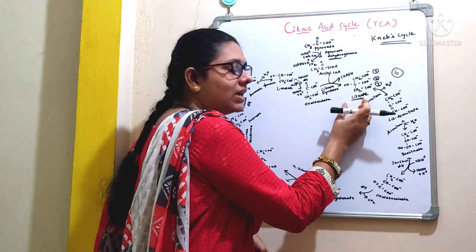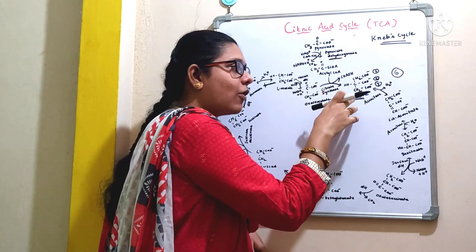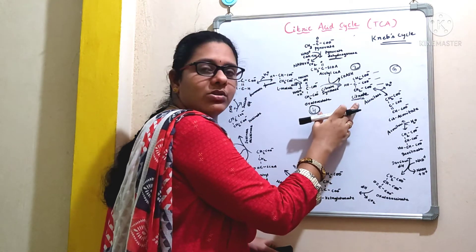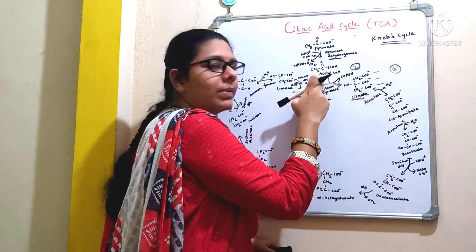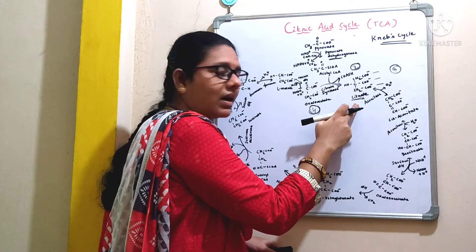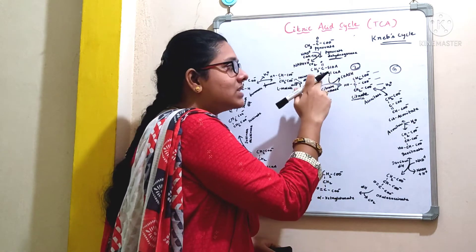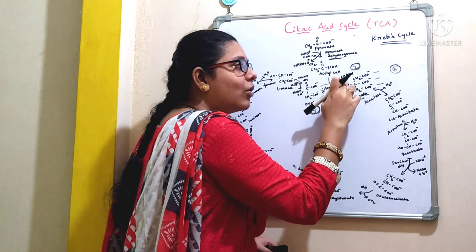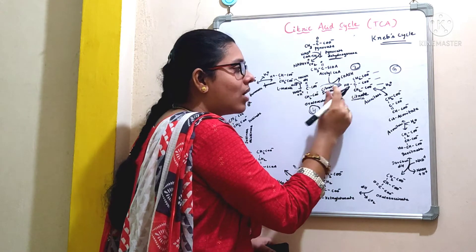The first step starts with the formation of an intermediate called citrate, which is a very important intermediate of this pathway. As the citrate is formed here, we call this cycle the citric acid cycle. The very first step of the TCA cycle is the formation of a 6-carbon compound called citrate, formed by the condensation of the 2-carbon compound acetyl-CoA and the 4-carbon compound oxaloacetate. This is an irreversible reaction where the acetyl-CoA molecule transfers its acetyl group to oxaloacetate, giving rise to citrate with the release of CoA, and the released CoA can react with more pyruvate. This reaction is catalyzed by an enzyme called citrate synthase.